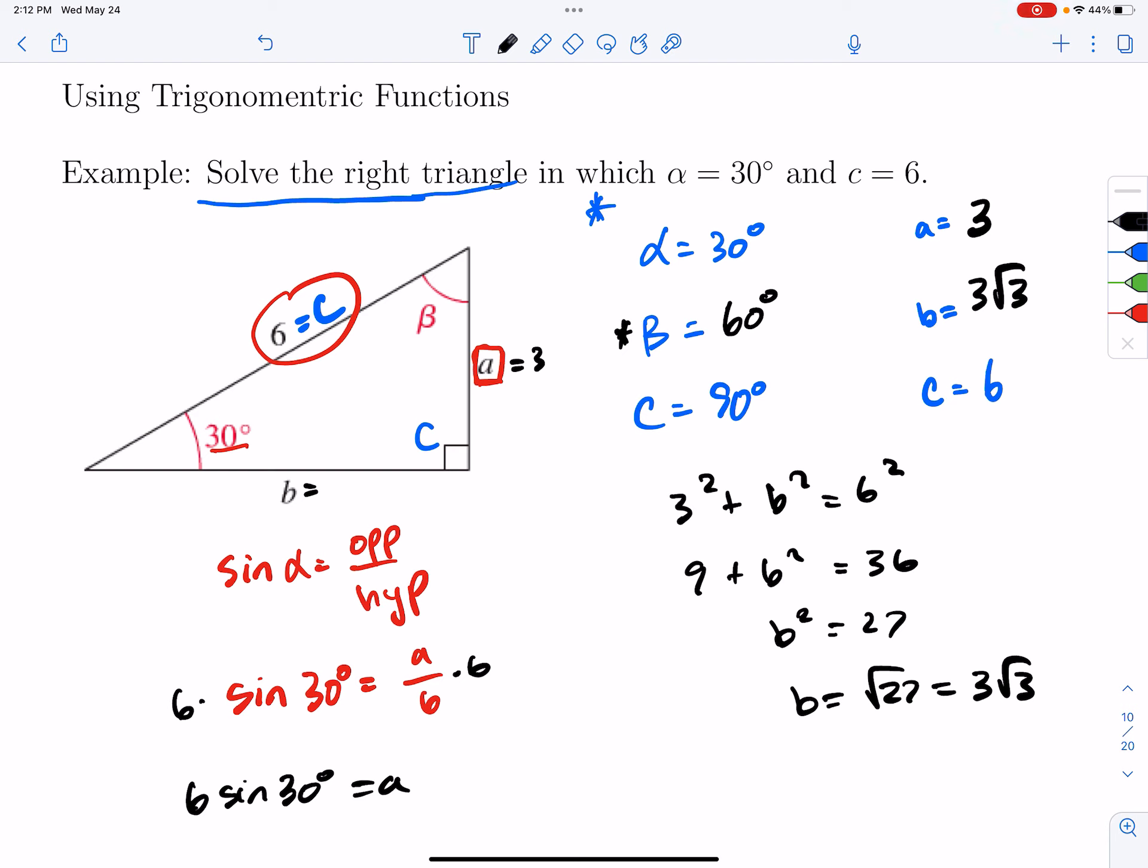And you don't necessarily need to simplify the radical to get 3 root 3, but I don't know. It's kind of nice to do it. It looks a little bit cleaner. Alright, so that's that example. Moving on, let's check this one out.